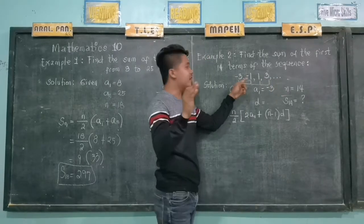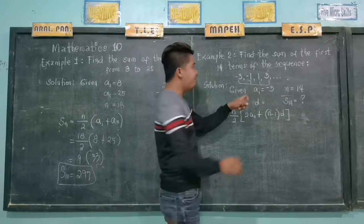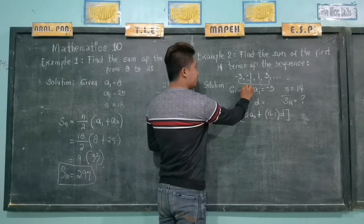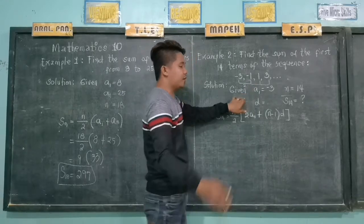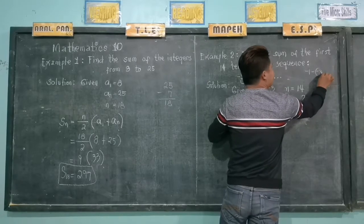Negative 1 minus negative 3, what is the answer? We have 2. We have negative 1 minus negative 3.